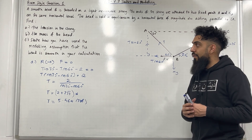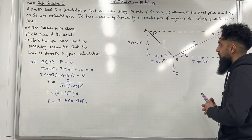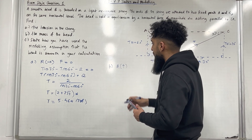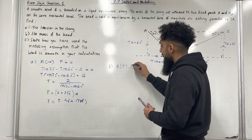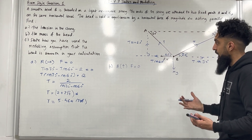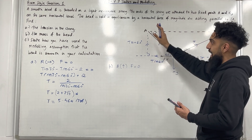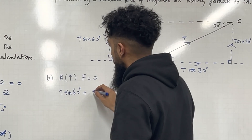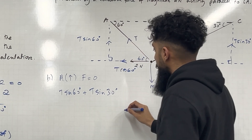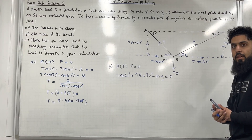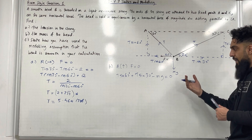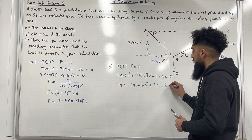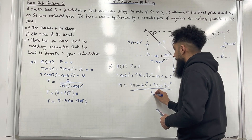Let's have a look at part B. For part B, we want to find the mass of the bead. To find the mass of the bead, we have to resolve vertically, taking upwards to be the positive direction. The resultant force F vertically is equal to zero because the bead is in equilibrium. So we have T sin 60° plus T sin 30° minus mg equals zero. Making M the subject gives M equal to T(sin 60° + sin 30°) divided by g.